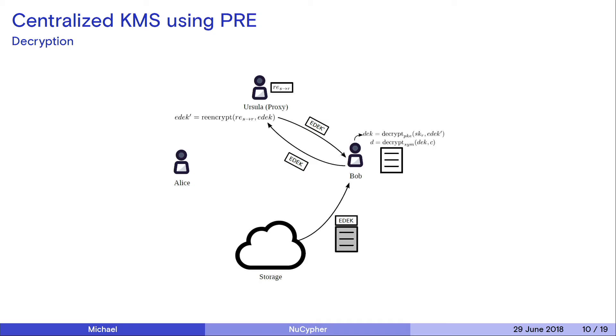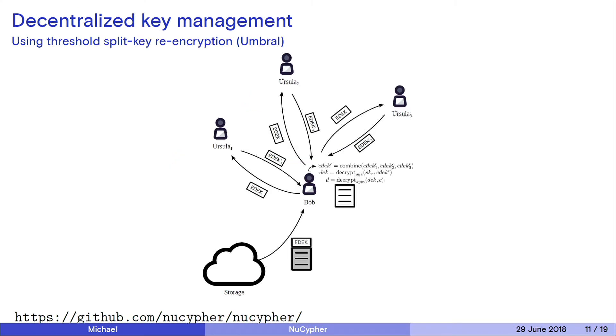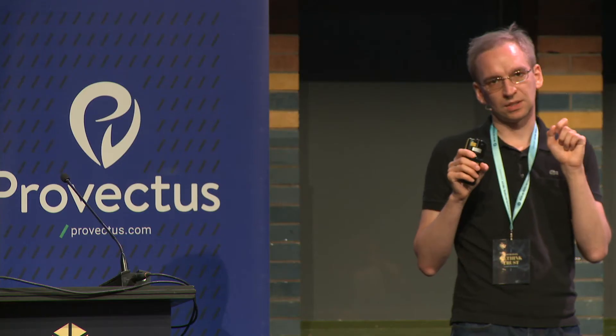We go a little beyond a simple one-proxy model. We found how to make proxy re-encryption split-key, so you split the trust to transform data between multiple proxies. Imagine you have 20 proxies, and you say that if at least 15 out of 20 proxies will re-encrypt the data, only then can the data be decrypted. We call this split-key threshold proxy re-encryption scheme Umbral.